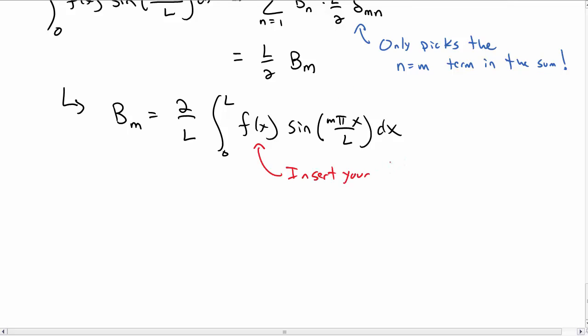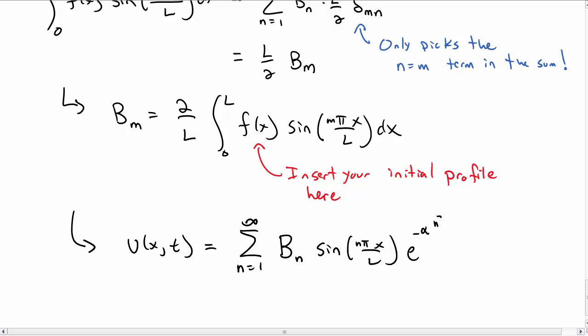And so if you want to find the solution, you just insert whatever your initial conditions and your initial profile function is here. Calculate the b sub m, and now you can insert that into your infinite sum for the b sub n here, sine of n pi x over L. Don't forget the exponential, minus alpha n squared pi squared over L squared t.